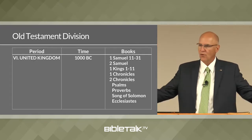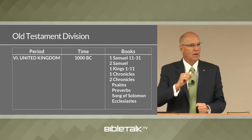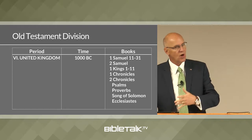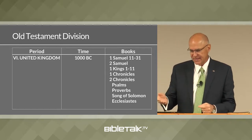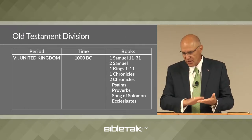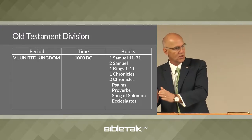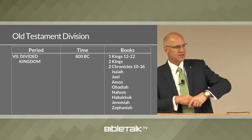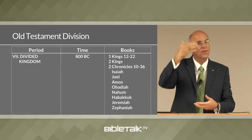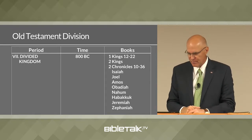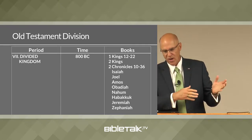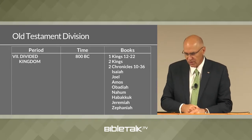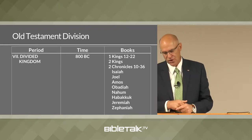Then the United Kingdom, when all the tribes were together under one king — Saul, David, and Solomon — around 1,000 B.C. The books covering that are First Samuel 11 to 31, Second Samuel, First Kings 1 to 11, First and Second Chronicles, Psalms, Proverbs, Song of Solomon, and Ecclesiastes. After Solomon dies there is a civil war and the divided kingdom period begins, splitting north and south around 800 B.C. The prophets Isaiah, Joel, Amos, Obadiah, Nahum, Habakkuk, Jeremiah, and Zephaniah all lived and wrote about that period.